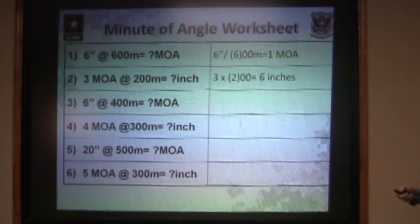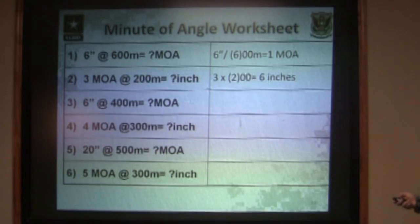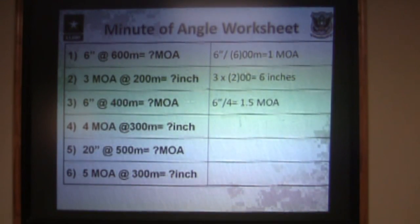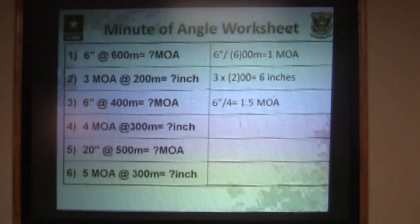Six inches at 400 meters equals how many minutes of angle? Six inches divided by four of your 400 meters gives you one and a half minutes of angle on target.